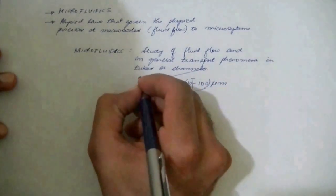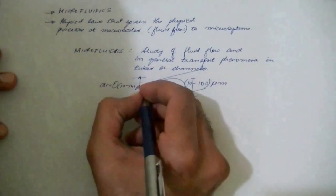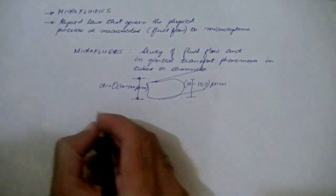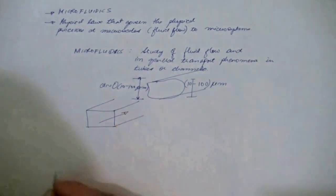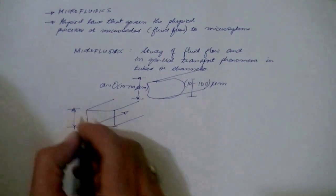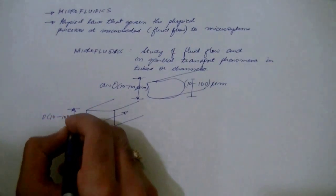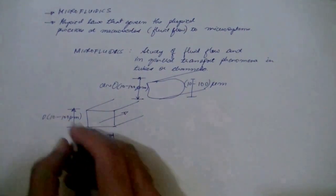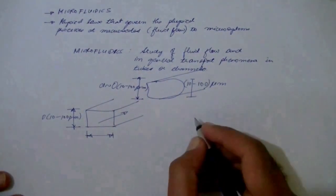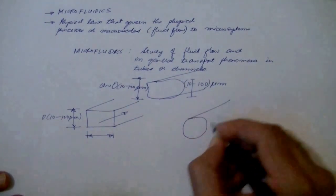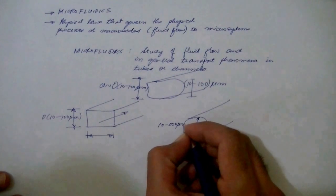So in this case we have this length which is on the order of 10 to 100 micrometers. For example we can have a rectangular cross section microchannel where the flow is in the axial direction and either the depth or the width of the channel is on the order of 10 to 100 micrometers, or both. Similarly you can have microchannels of other shapes such as a circular cross section channel where the diameter is of the order 10 to 100 micrometers.